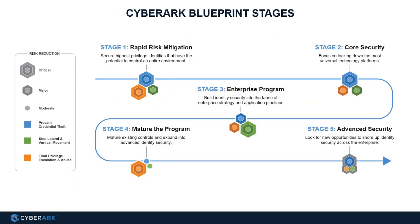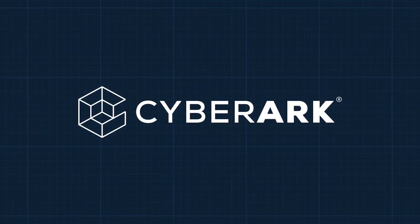The three guiding principles we just covered will guide our security control recommendations, which will ultimately be addressed in five sequential stages — helping you prioritize quick wins to achieve rapid risk reduction, progressively address advanced use cases, and align security controls to your organization's digital transformation efforts. Ready to take your first step towards building a successful identity security program? Click here to start designing your identity security roadmap today.